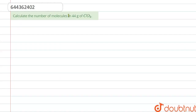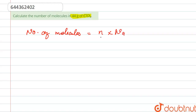The question is: calculate the number of molecules in 44 grams of CO₂. The number of molecules can be calculated by n multiplied by Nₐ, where n is the number of moles and Nₐ is Avogadro's number, whose value is 6.023 × 10²³.